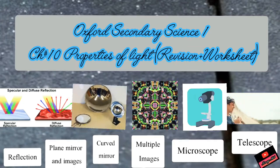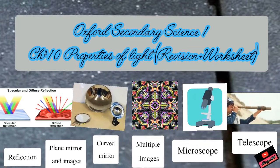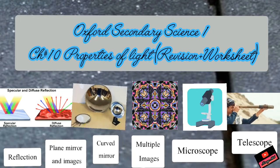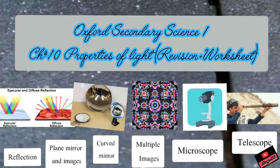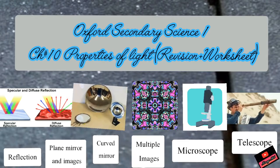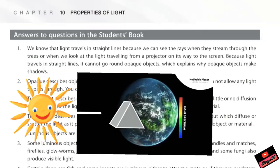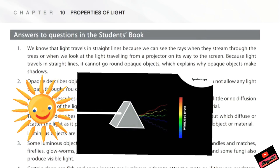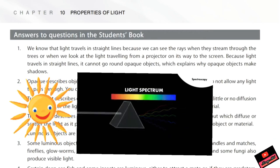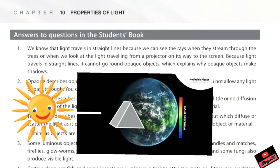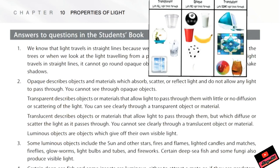Assalamu alaikum and very good morning Grade 6. Today we will completely do Chapter number 10 question answers and worksheets in just one lecture. So are you ready to do reflection, mirrors, and everything? Light moves in straight lines and it is made up of many colors. The answers are here, you can pause the video.